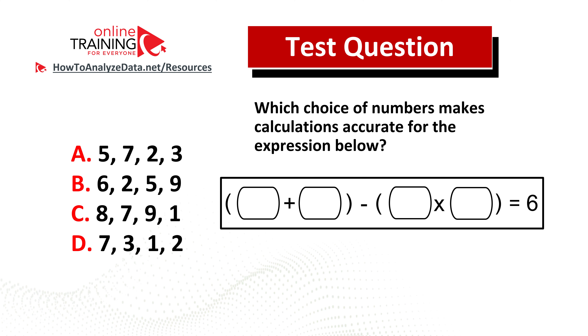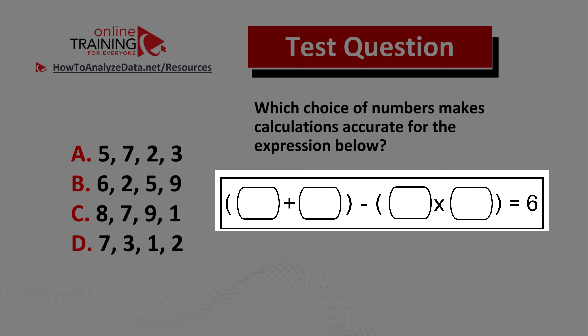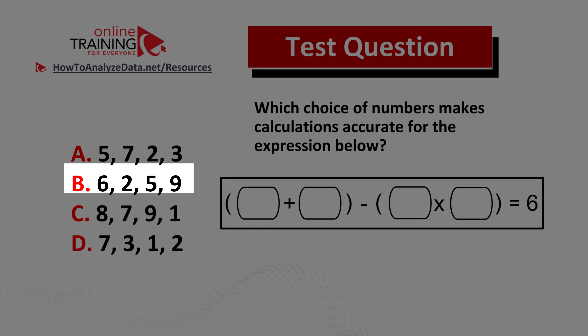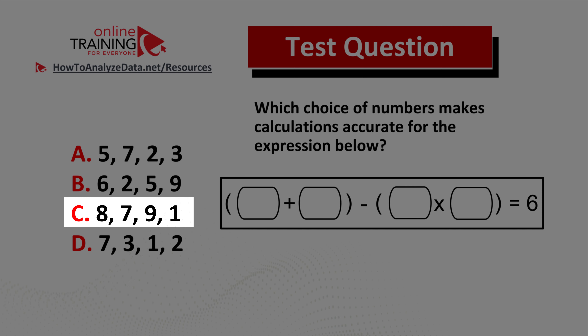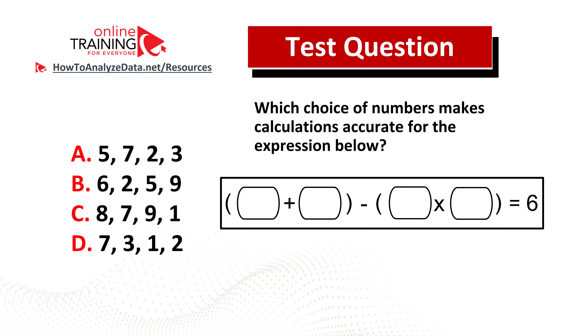Let's look at a real-life assessment test question which validates your ability to do mental math. Which choice of numbers makes calculations accurate for the expression below? You have two groups of numbers — the first in parentheses — and an expression that equals 6. The four choices are: choice A: 5 7 2 3; choice B: 6 2 5 9; choice C: 8 7 9 1; and choice D: 7 3 1 2. Now might be a good time to pause this video to come up with the solution on your own.